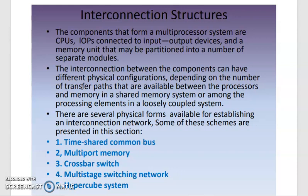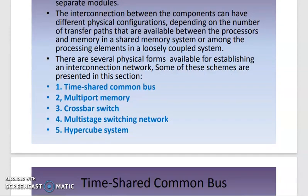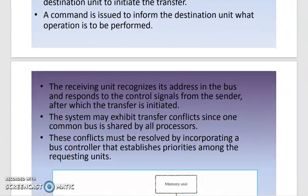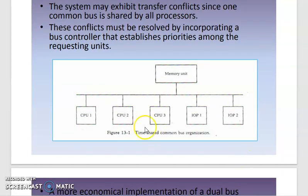The physical structures of multiprocessor systems include the time-shared common bus, multiport memory, crossbar switch, multi-stage switching network, and hypercube system. The first physical organization we will discuss is the time-shared common bus.